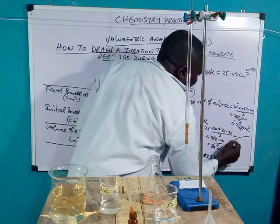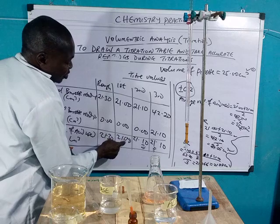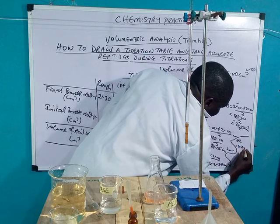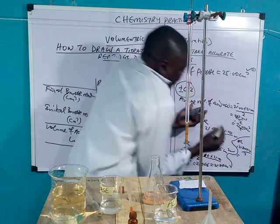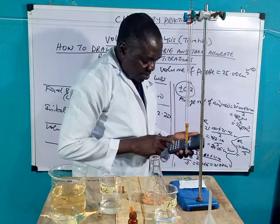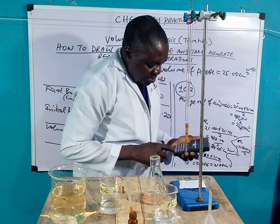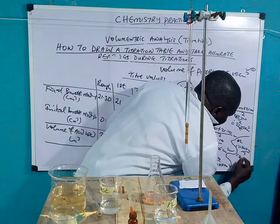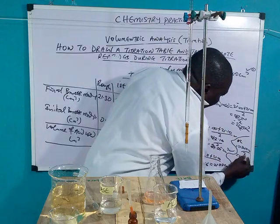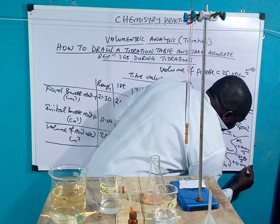The last option is to use 21.30 and 21.10, since the difference is exactly ±0.20 — within the concordance range, so don't lose marks. 21.30 + 21.10 = 42.40 ÷ 2 = 21.20 cm³. So the average volume of acid used is 21.20 cm³.